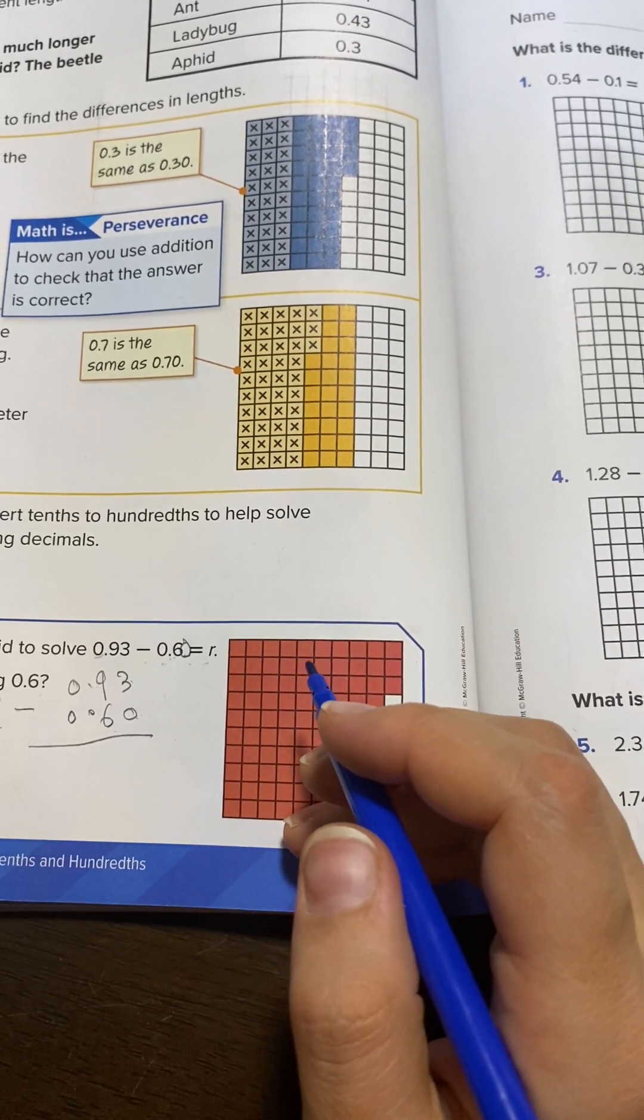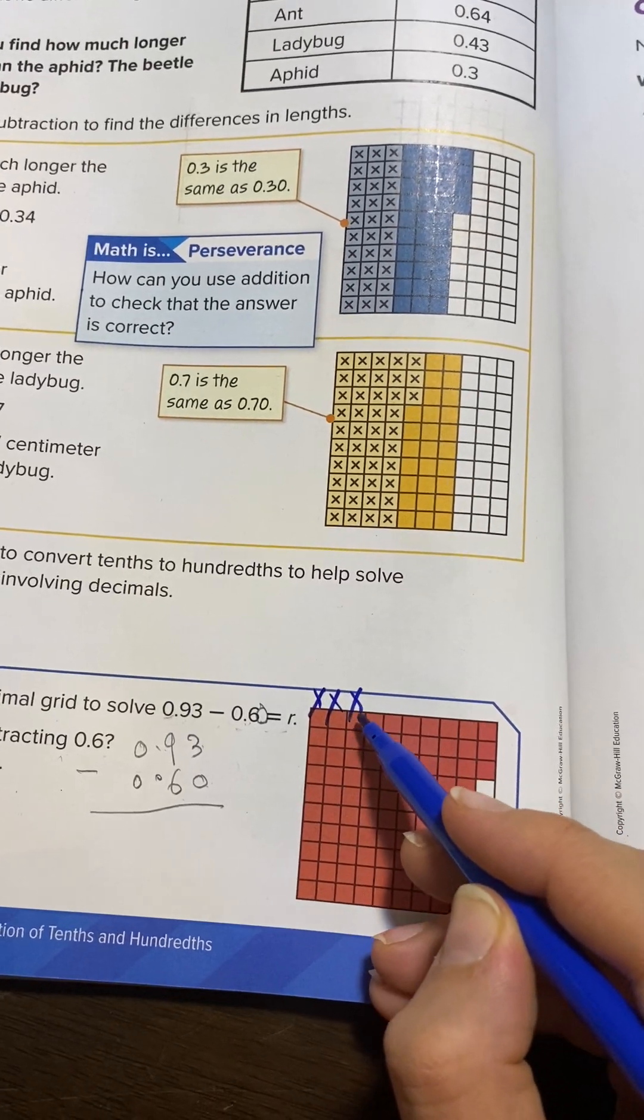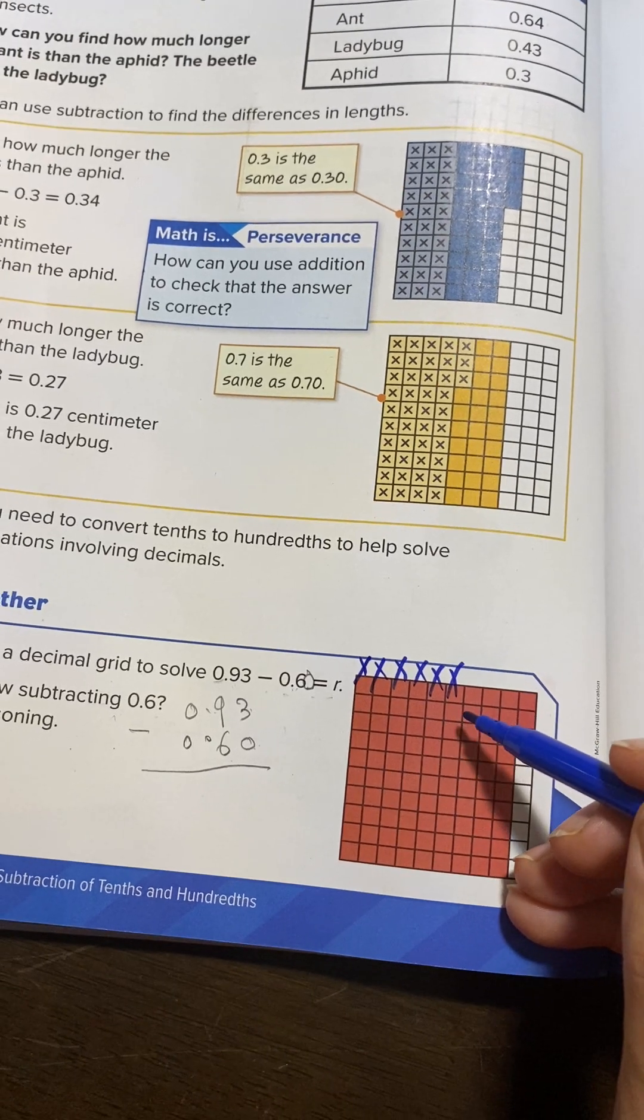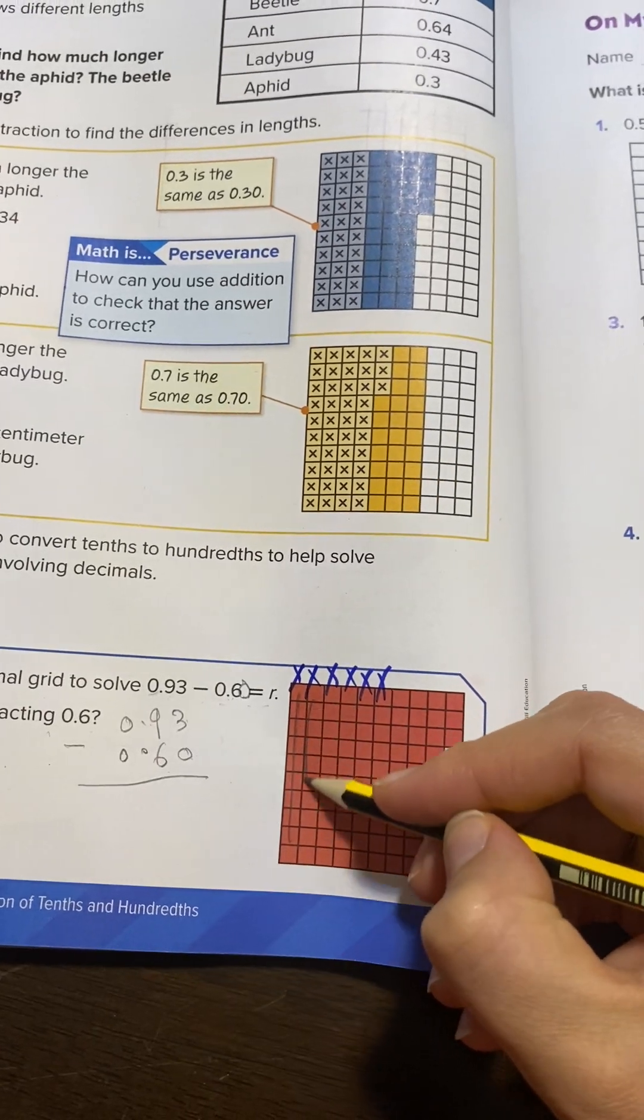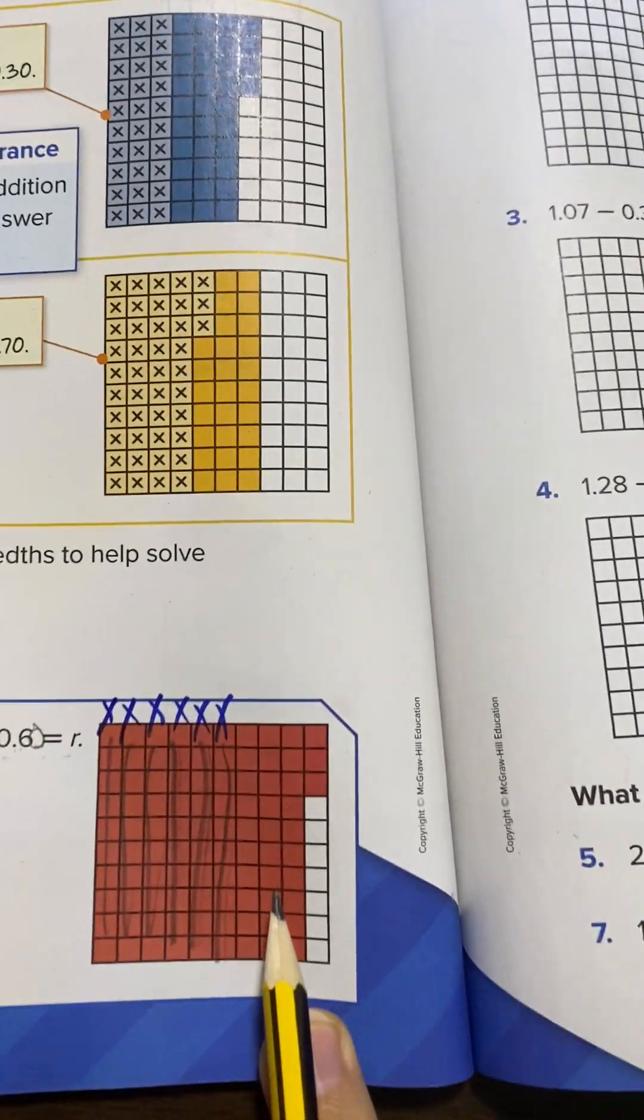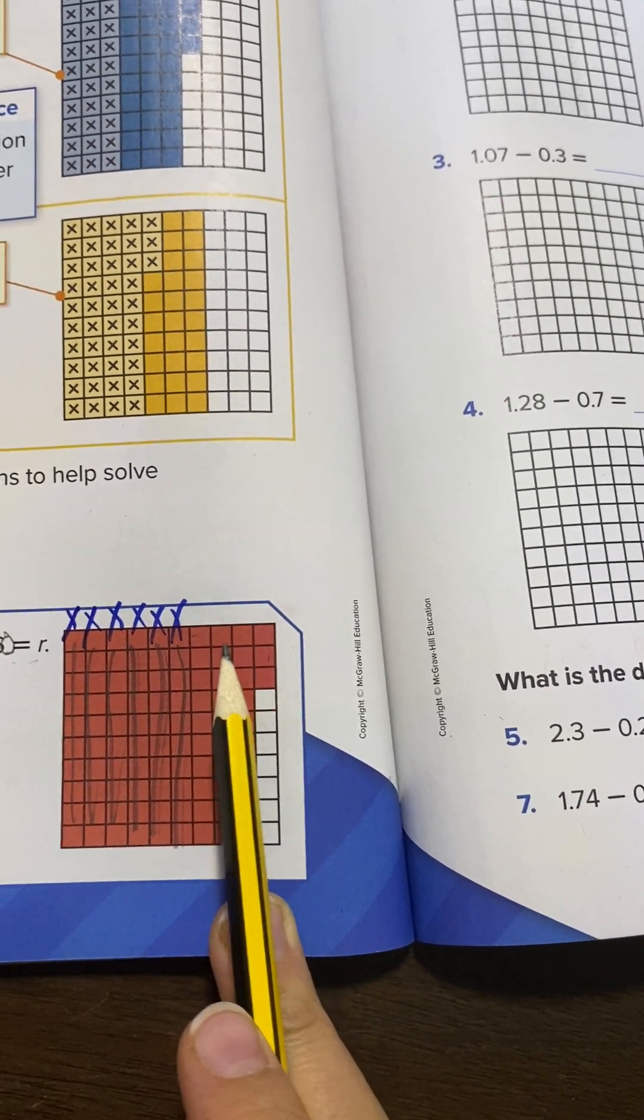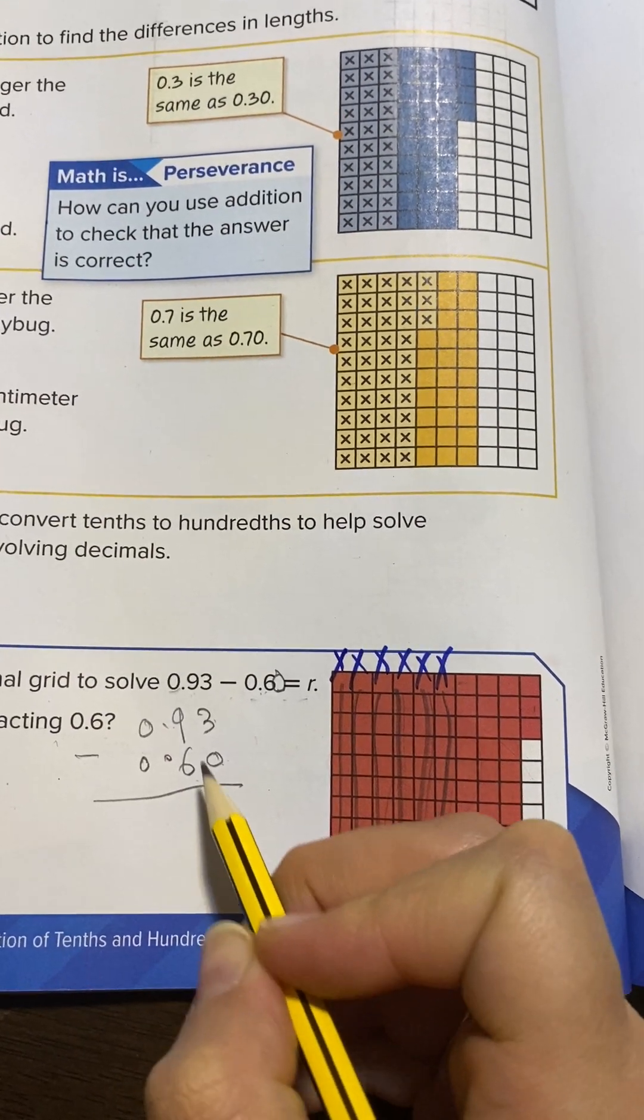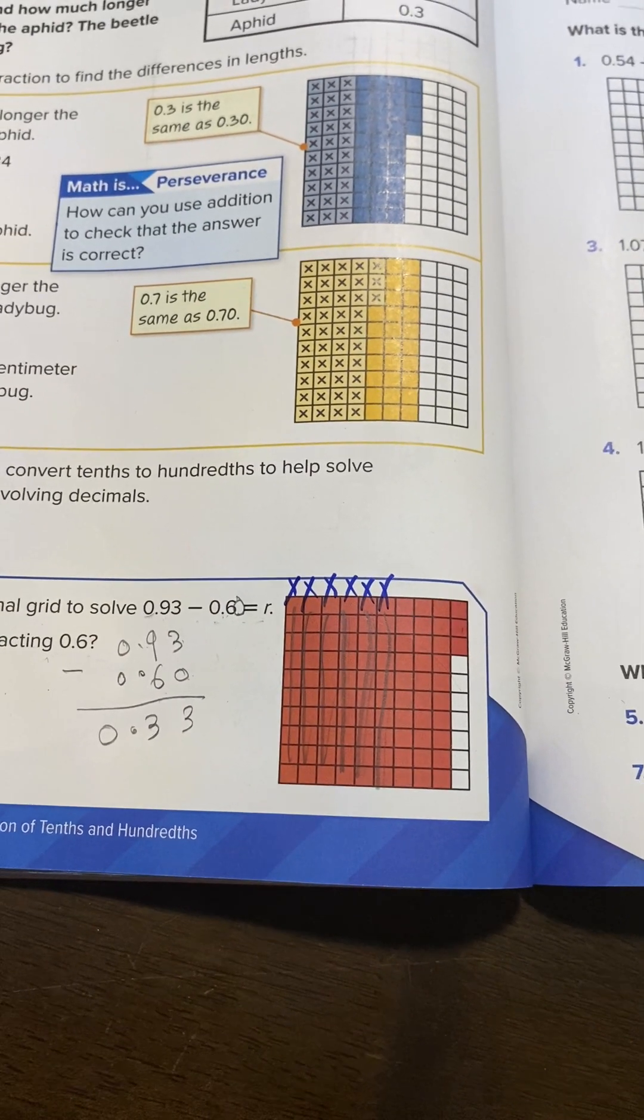Okay, you will erase 60. This one, this one - three, four, five, six. So we erase all of these six columns, 60 squares. So how many left? 10, 20, 30, 3 - 33 squares. If you do this way, let's check: 3 minus 0 is 3, 9 minus 6 is 3. So how many squares are left? 33 hundredths.